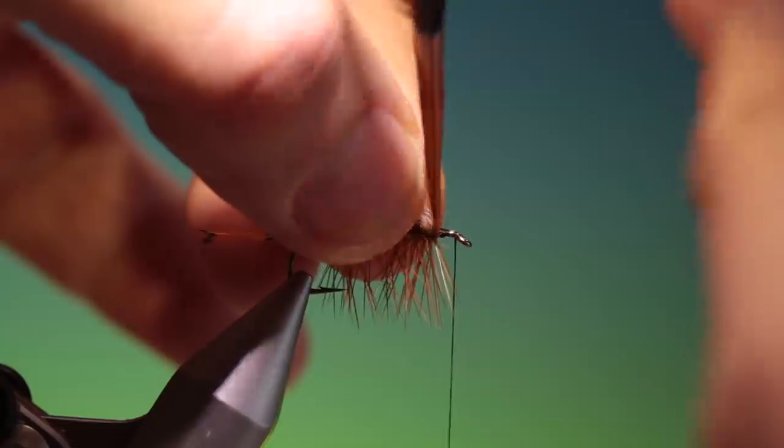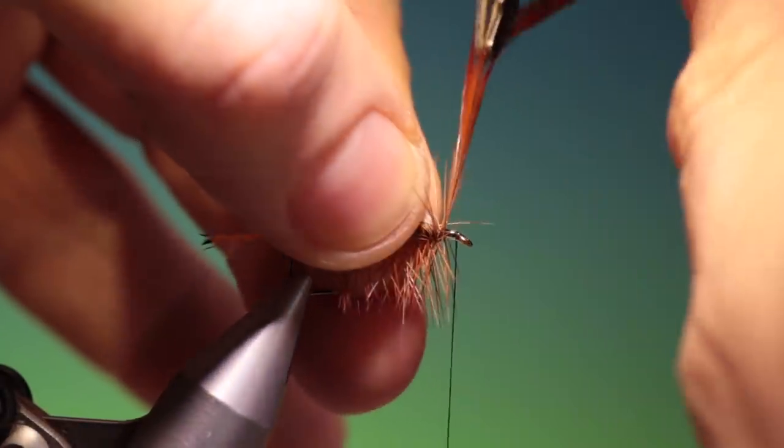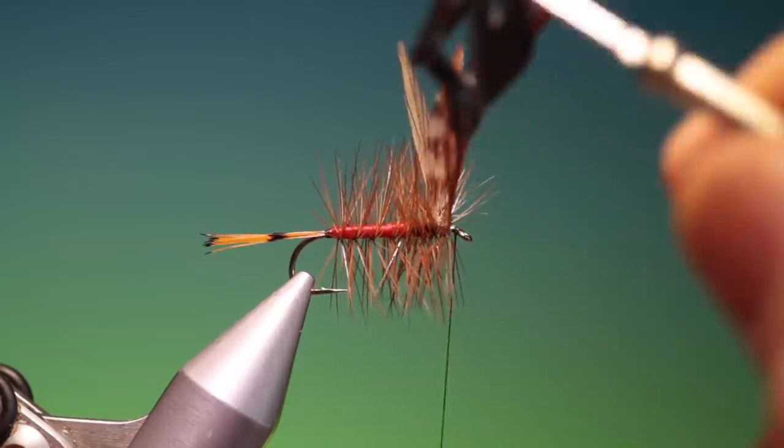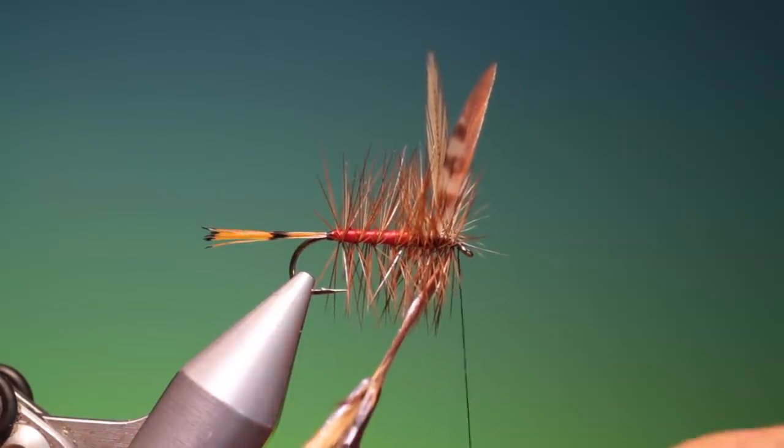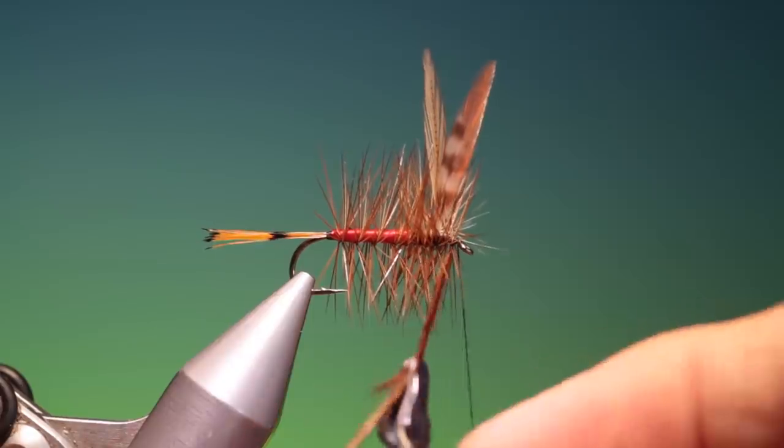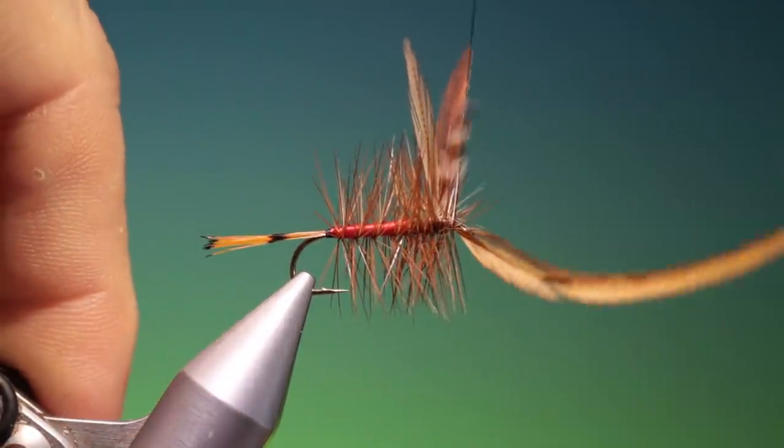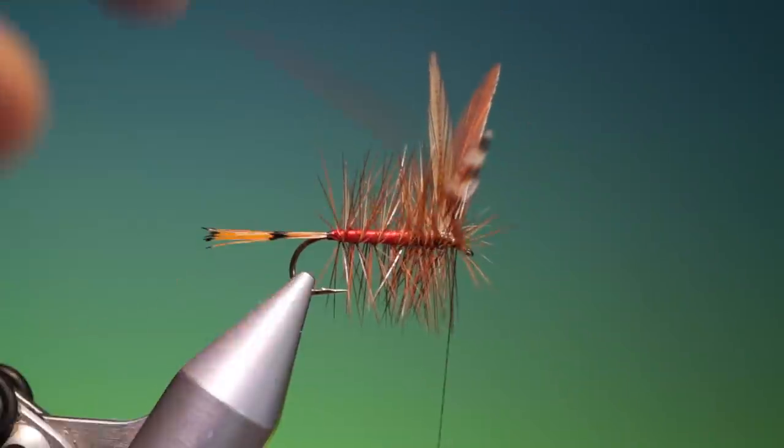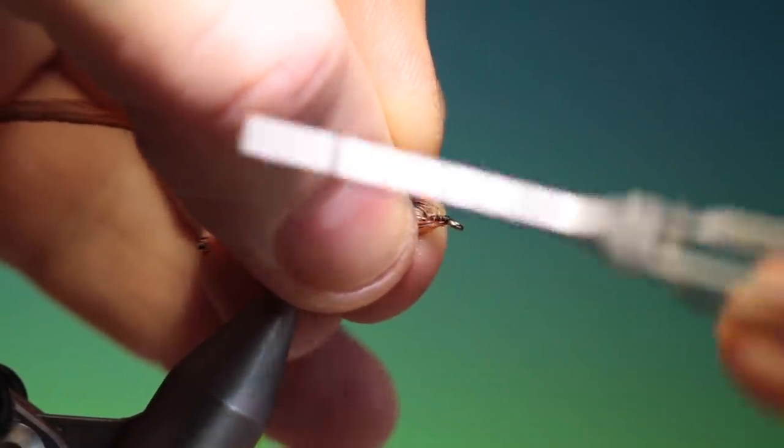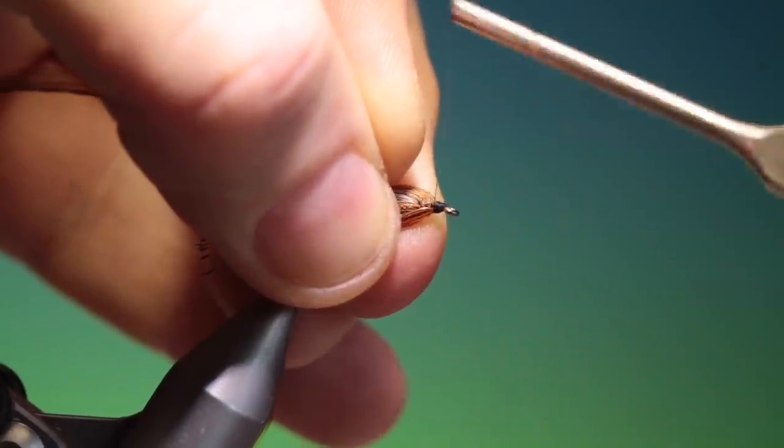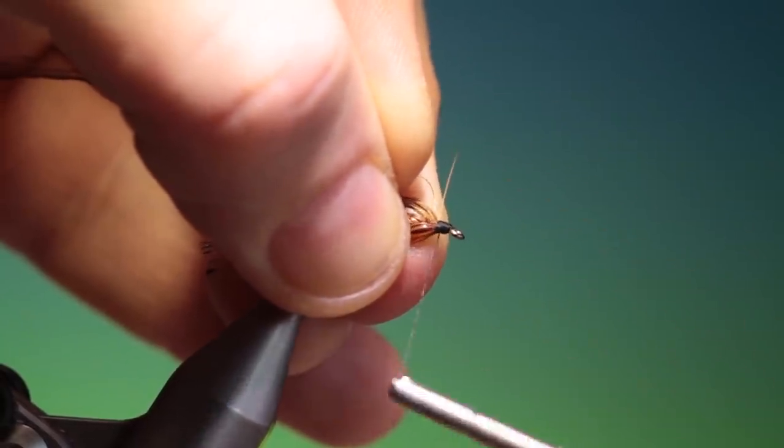Then we can pull absolutely everything back and go in front. And I'll spin my thread clockwise to give it a rain profile. And then I'll come up and tack that in first with one turn, and then another. And then I'll pull everything back. And I'll go back. So we have room for the partridge hackle.